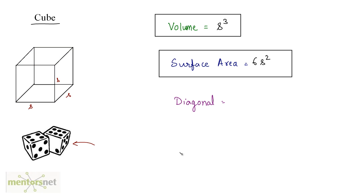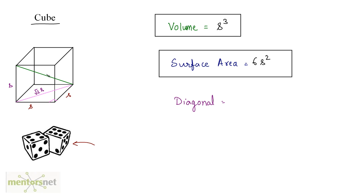Let us move on to the diagonal. The diagonal of a cube is the line connecting a point to its opposite point. This green line is the diagonal of a cube, and each diagonal's length is the same. We can calculate the length of this green line using the Pythagorean theorem, but for that we will need this pink line. If you look at this cube from below, it forms a square with a right-angle triangle. Each side is s, so the length of this pink line — the base diagonal — will be √2 · s using the Pythagorean theorem. The vertical side is also s because that's the side of the cube.